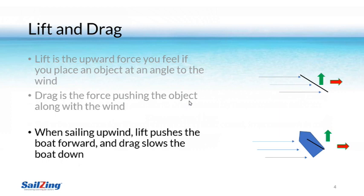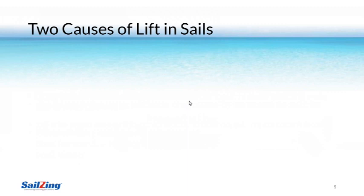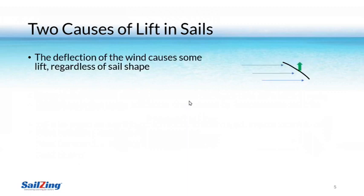Hopefully this is pretty easy to understand. The detailed theory of lift is actually quite complex and many simplified descriptions get it wrong. We don't need to know all the details, but you should know that there are actually two causes of lift in sails. First, just like our previous slide, simply placing an object in the wind deflects the wind and causes lift. That's why high performance airplanes have very flat wings and why they can fly upside down.